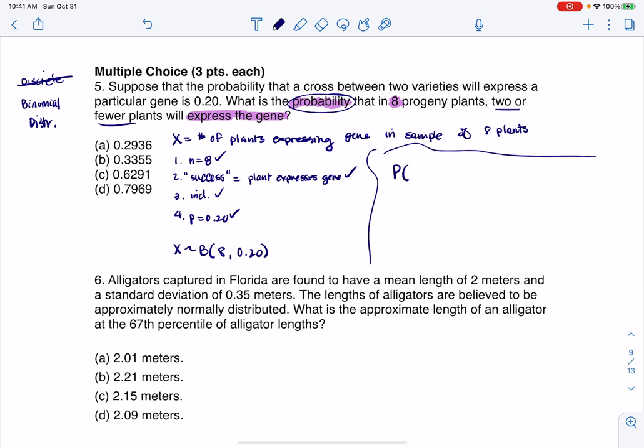So I want two or fewer plants, so that means x is less than or equal to two, and we actually have a direct calculator command for that. We have binomial CDF.